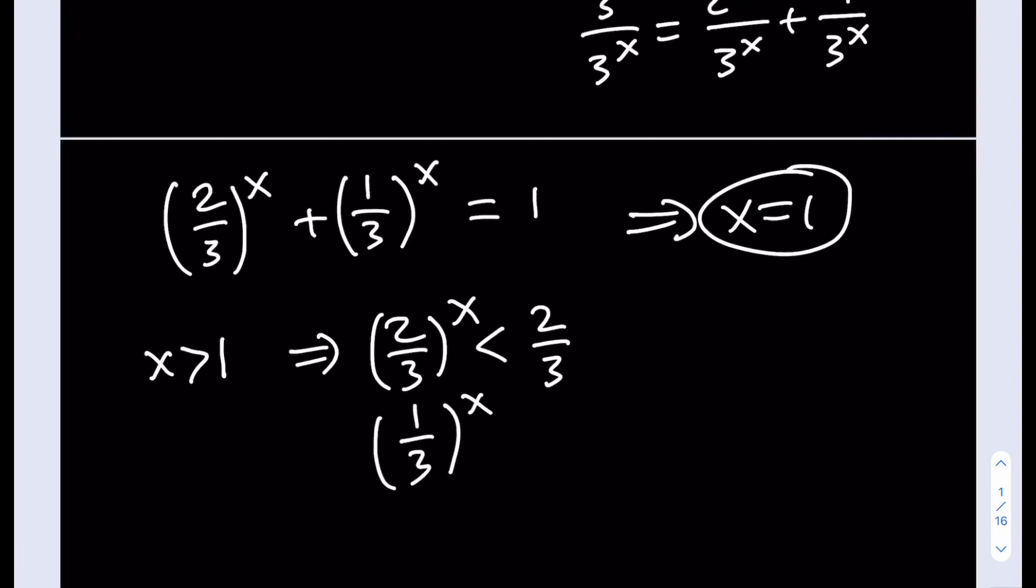So that means that this power is going to be less than 2/3, and the same thing goes for this. It's going to be less than 1/3. So their sum is actually going to be less than 1, which means that it can never equal 1. So our sum is going to be this plus this, which can never equal 1 because it's less than 1.